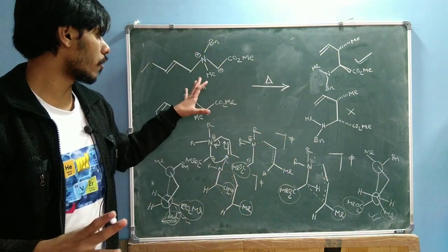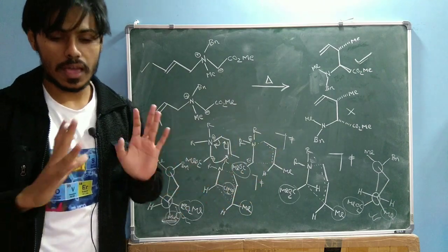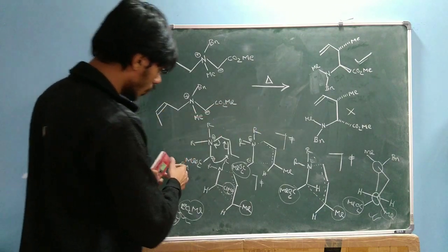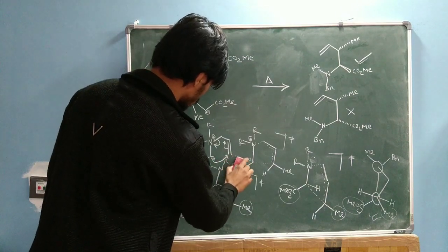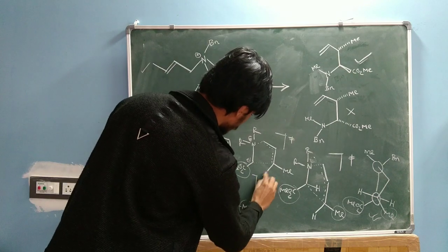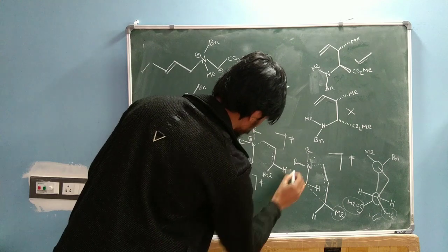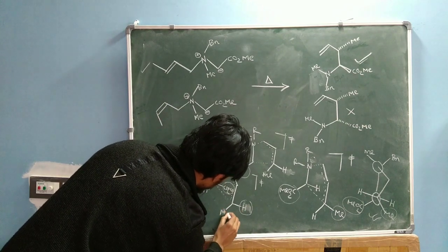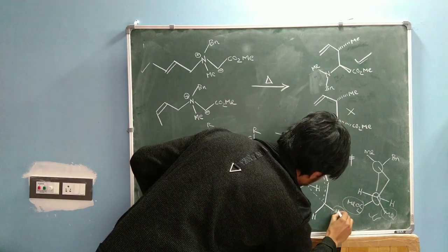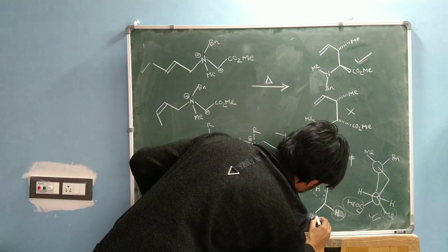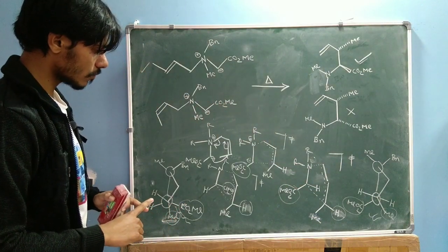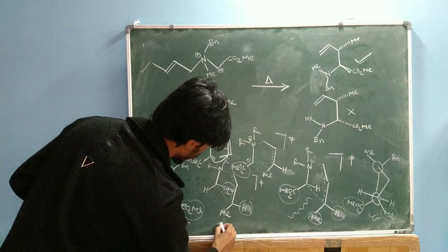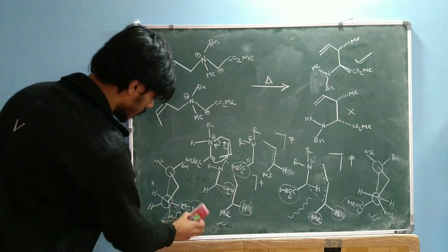In the preferred transition state, this methyl and this ester are anti to one another, so in the product they will also be anti — this is why the anti product is the major product for the trans case. We can do the same analysis for the cis isomer. For the cis double bond, all we do is put the methyl group on the same side, switching its position, and then evaluate the two transition states the same way.